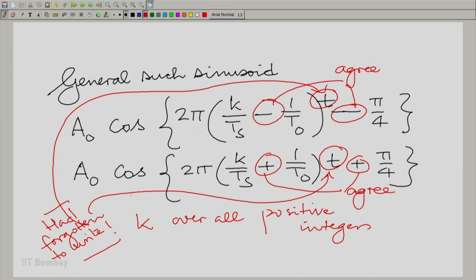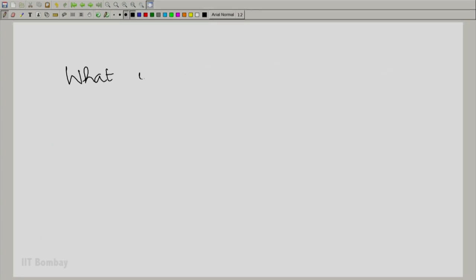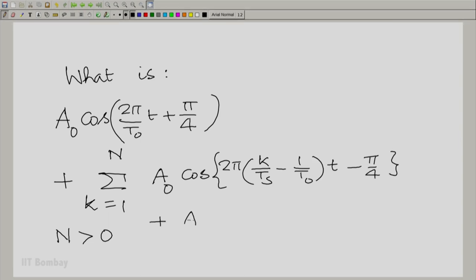Now, you have all these positive multiples of 1 by t_s. And you add and subtract. And therefore, we can now ask what happens when we add? What is A_0 plus summation over all k? Let us see. So, if you take k equal to 1 to infinity, we do not know if it will converge. So, let us take k equal to 1 to n.